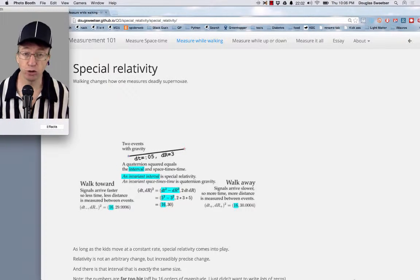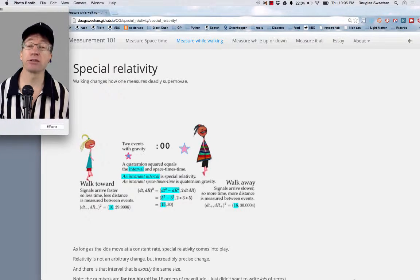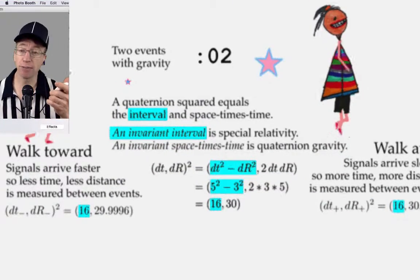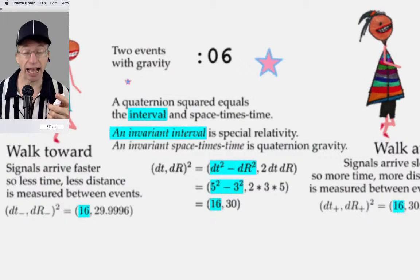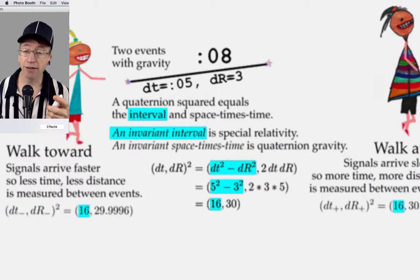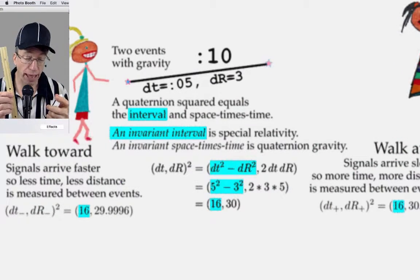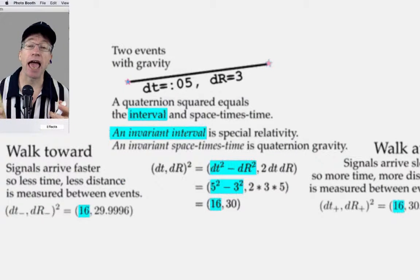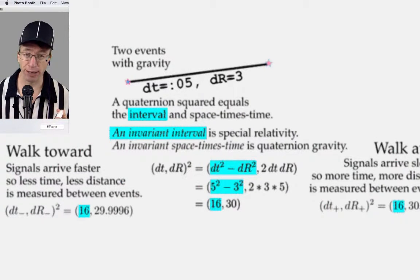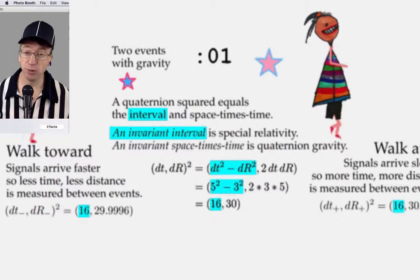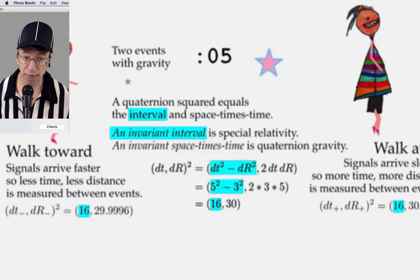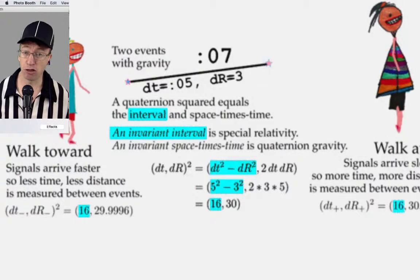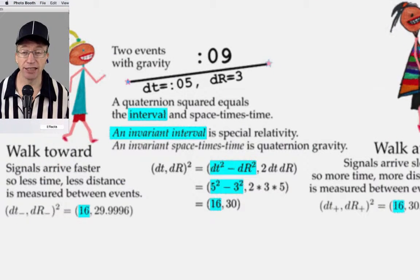So we have these two supernova. And I, as the reference observer, say that the time interval between the two, dt, is exactly 5. I use my trusty ruler and get the space dr measurement, and it's exactly 3. What I like to do is square things up and get the interval being 16 and the space-times-time being 30. That is our starting point.